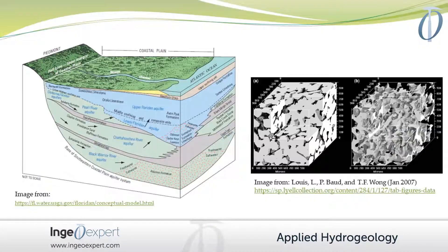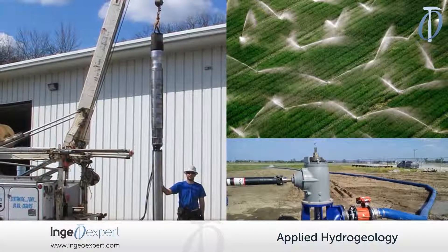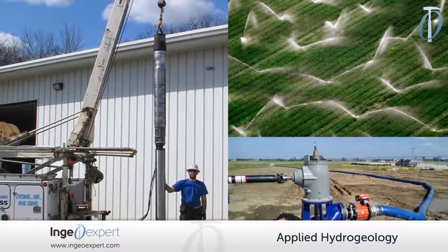The course layout is as follows. The first module will focus on the conceptual water cycle, types of aquifers, and the hydraulic properties of subsurface materials, namely porosity and permeability. The student will achieve a new understanding of groundwater's importance for human consumption, industrial processes, agriculture, and mining.